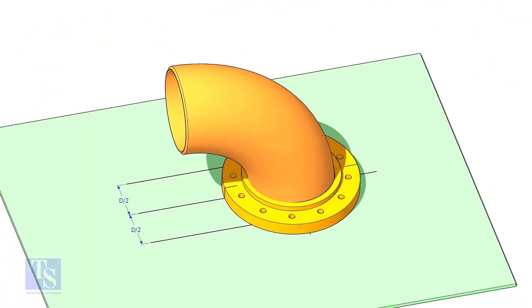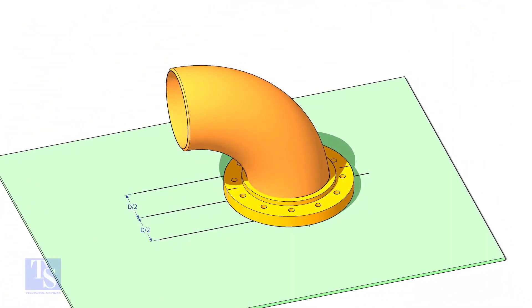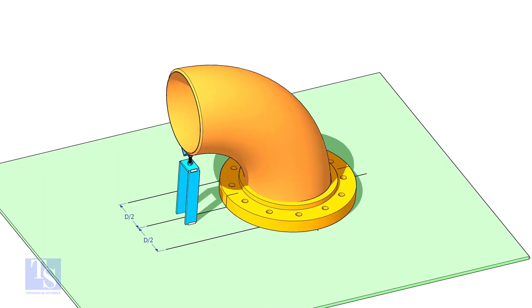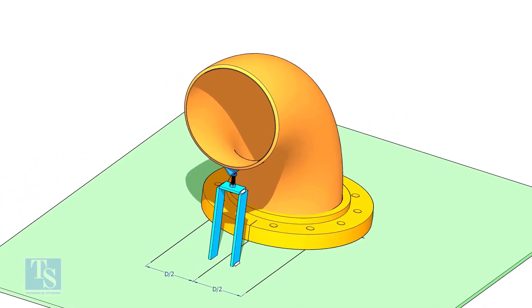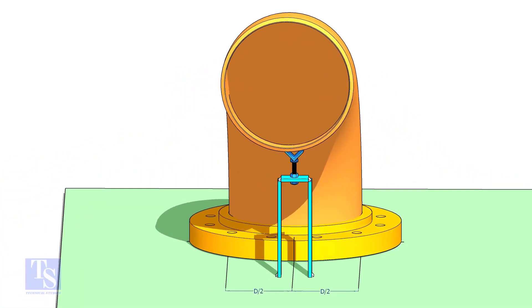Put the elbow in the flange. If required, tack weld the screw jack below the elbow face as shown.